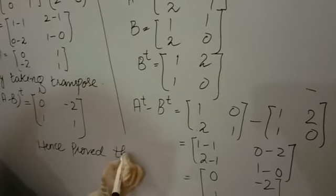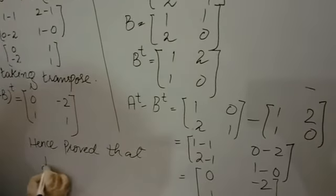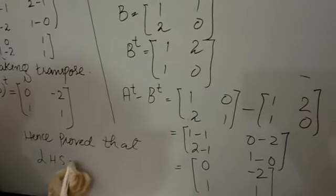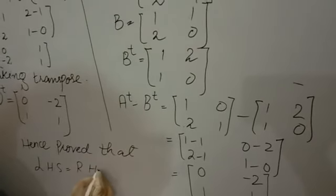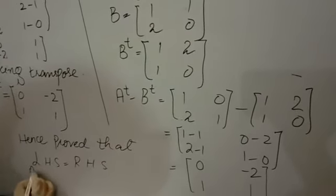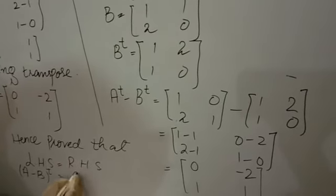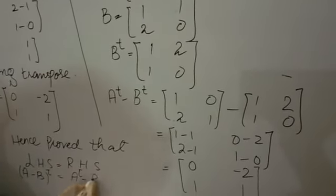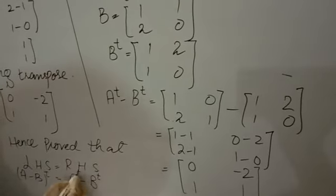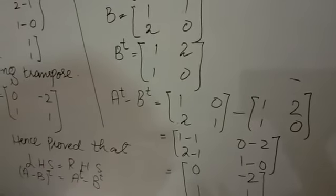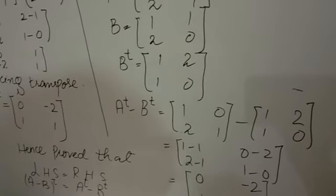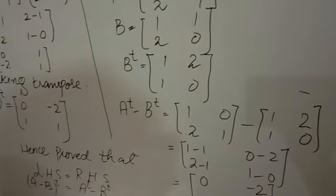Hence proved that left hand side is equals to right hand side. A minus B whole transpose is equals to A transpose minus B transpose. Now try another part, part 4.